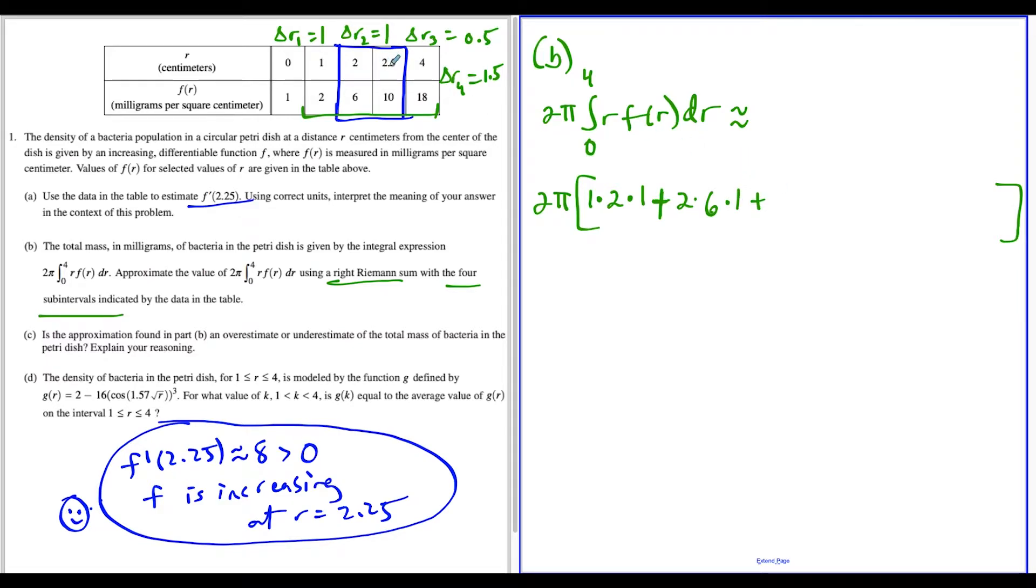Next, the radius is 2.5 times the function value of 2.5, which is 10. We multiply by delta r, which is 0.5 here. For the last entry, we have an r value of 4 times f of 4 equals 18, multiplied by the last delta r of 1.5.